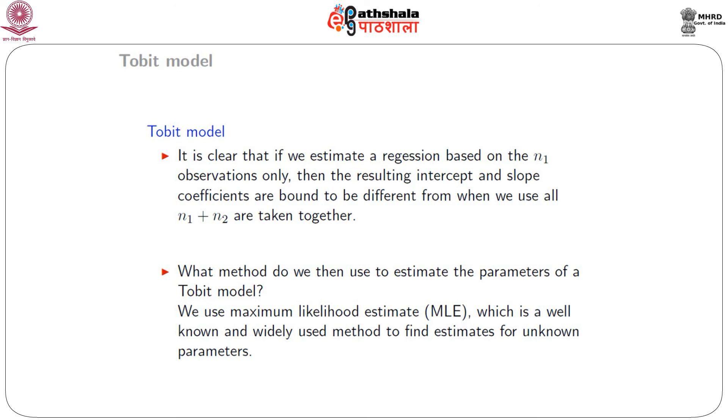A separate module will be dedicated to the discussion of fitting a Tobit regression model using R. In this module, we have learned how to fit a Tobit regression model to data where the response variable is categorical and takes two possible values, 0 and 1. We illustrated using examples how to fit a regression model and estimate the parameters of a Tobit regression model.